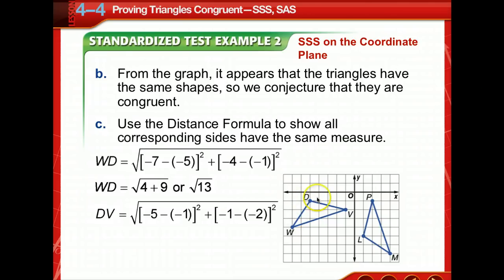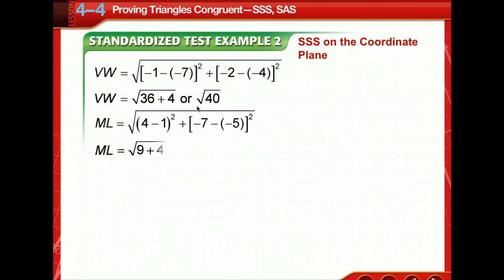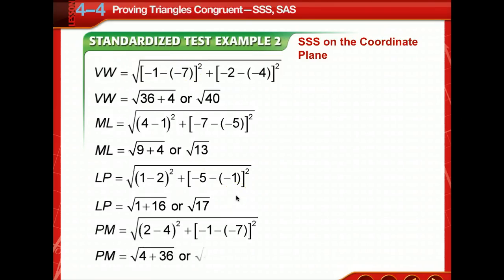So we've got a square root of 13. We're going to have a square root of 17. And finally, a square root of 40. So those are the distances, the length of all the sides of one triangle. Now we're going to find the length of every side of the other triangle. And look, square root of 13, square root of 17, looks like they're all congruent. And square root of 40, sure enough, those are the exact same measurements we got on the first triangle.